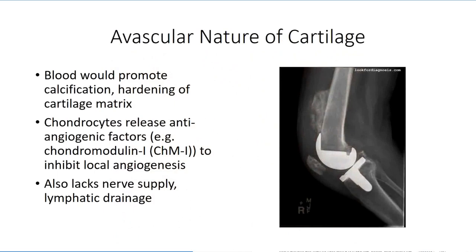We mentioned the blood supply embedded in the perichondrium. We don't, however, see any blood vessels within the cartilaginous matrix itself. This is because of the negative effects that a rich vascular supply would have on cartilage. Calcium ions within the blood could crystallize within the cartilage matrix, resulting in matrix calcification. A similar effect is seen with trauma and bleeding in muscle tissue, which results in calcification, a condition known as myositis ossificans. To prevent this from happening, chondrocytes secrete anti-angiogenic factors, such as chondromodulin 1, to inhibit local angiogenesis from occurring.